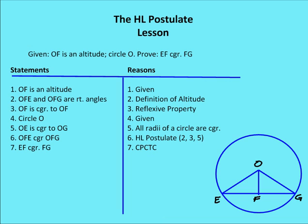Now let's use that in a proof. Here we have a circle with center O, and OF is the altitude to EG. I'm going to prove that EF is congruent to FG. I'll use the hypotenuse leg postulate as part of this two-column proof. First, OF is an altitude — that's given — and therefore angles OFE and OFG are right angles by the definition of an altitude. Then I'm going to say that OF is congruent to OF, so the altitude is congruent to itself.